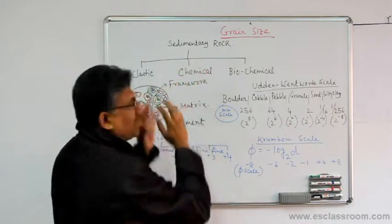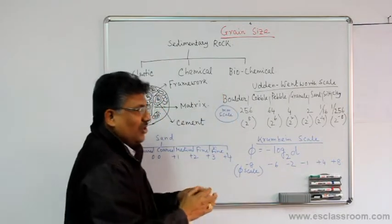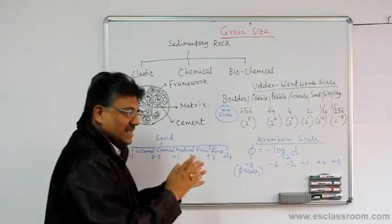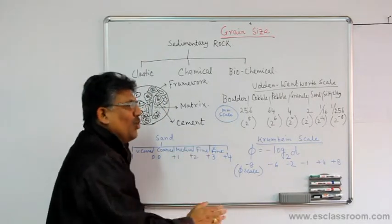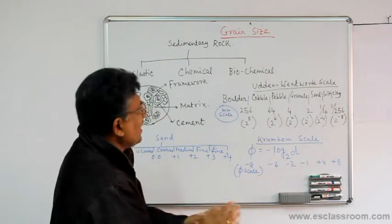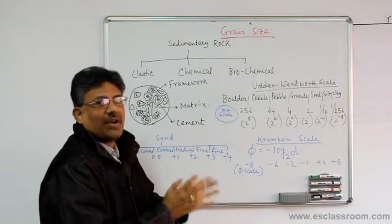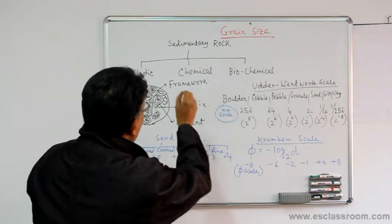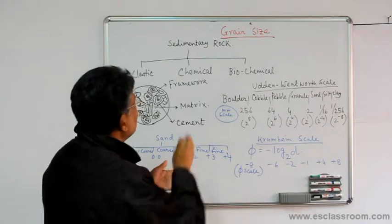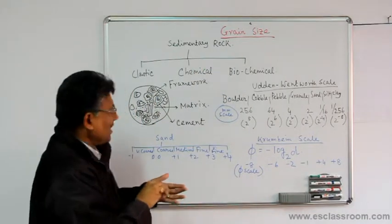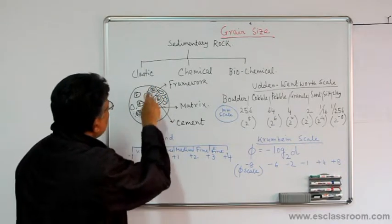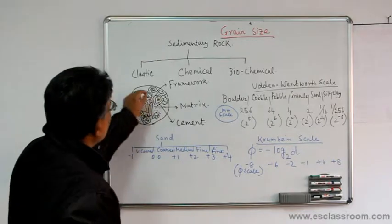The biochemical sedimentary rocks are those formed by biological processes which get changed and thereby form a product. For example, coal and oil are ultimately the result of biological processes operating to form the kind of product that we call the biochemical sedimentary rock.